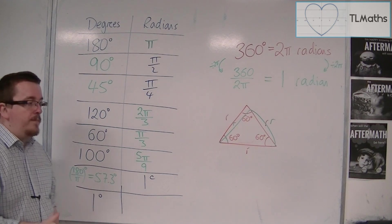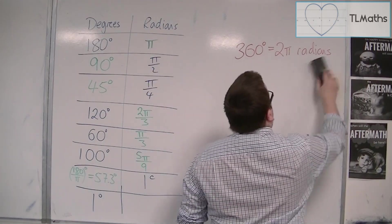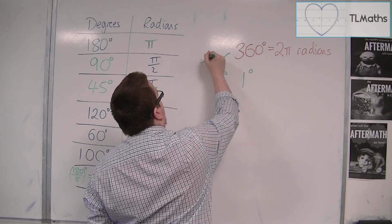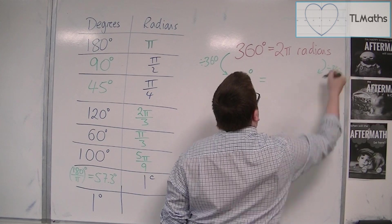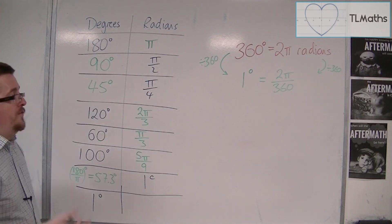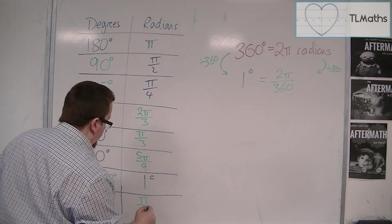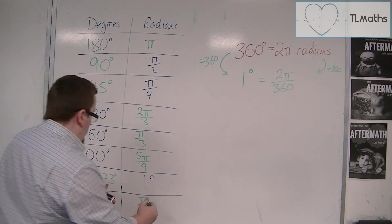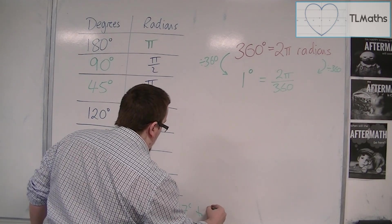Now, in order to find 1 degree in radians, we can do a very similar trick to this. So, if I want 1 degree, I would divide 360 by 360 in order to get 1. So, I must do exactly the same to the right-hand side. And so, this would be written as 2 pi over 360. Or, dividing both top and bottom by 2, pi over 180. So, if we work that out, that gets us 0.017 radians to 3 decimal places.